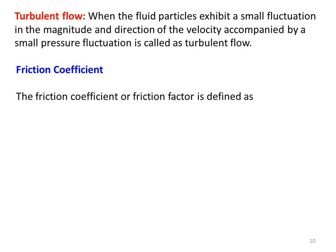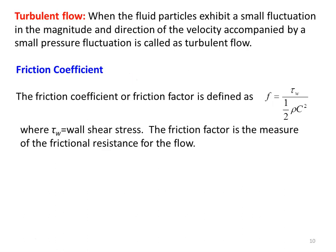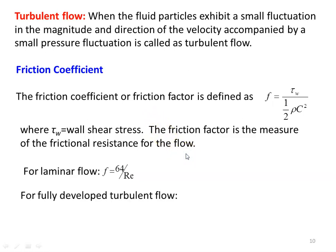The friction coefficient is defined as F equals wall shear stress tau_W divided by (1/2 × rho × C²), where tau_W is wall shear stress. The friction factor measures frictional resistance for the flow, which is an important parameter in gas dynamics. For laminar flow, F equals 64 divided by Reynolds number. For fully developed turbulent flow, friction factor F equals 0.0306 divided by Reynolds number to the power 0.143.